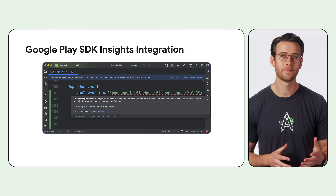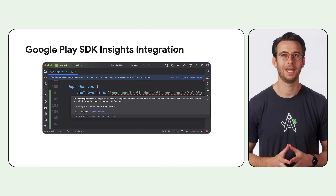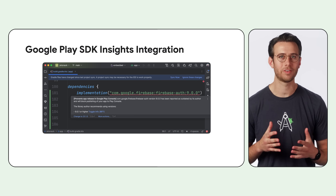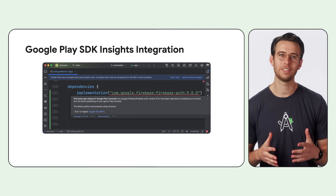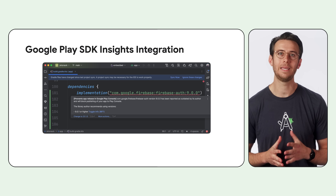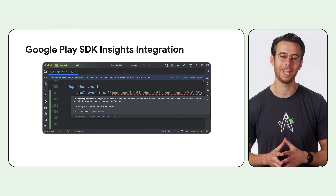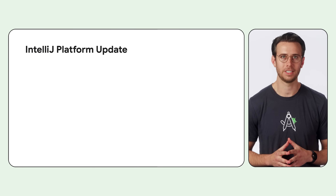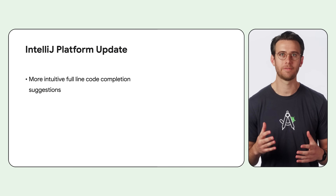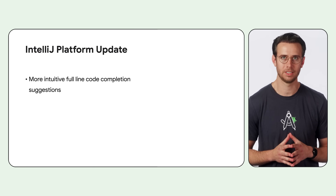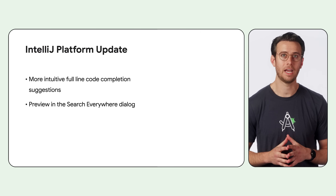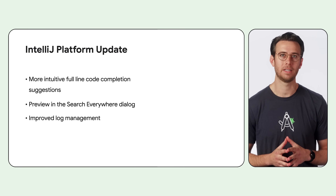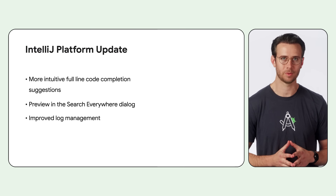Furthermore, Android Studio provides helpful quick fixes and recommended version ranges whenever possible, making it easier to update your dependencies and keep your app more secure and compliant. Ladybug Feature Drop ships with IntelliJ Platform 2024.2, which added many new features such as a more intuitive full-line code completion suggestion, a preview in the Search Everywhere dialog, and improved log management for the Java and Kotlin programming languages.